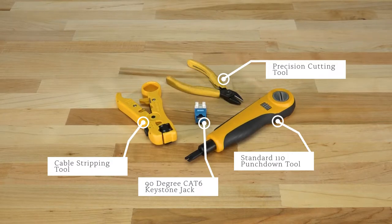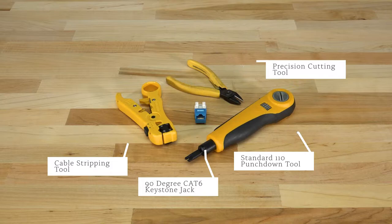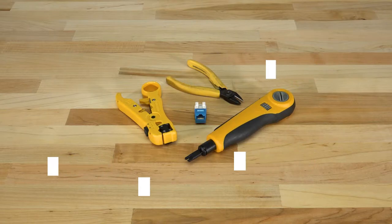We'll be using a punch down tool with a 110 blade, a pair of precision cutters, a 90 degree keystone jack, and an adjustable cable stripping tool.